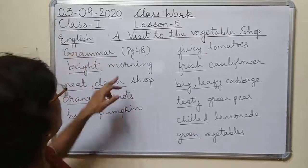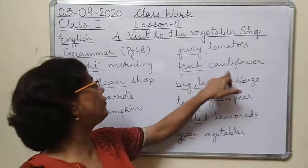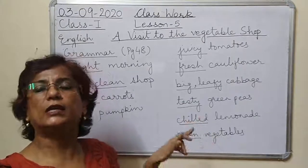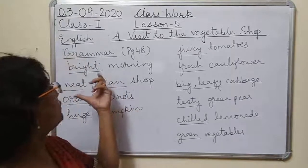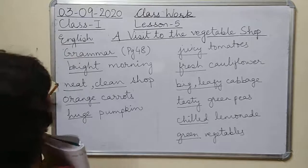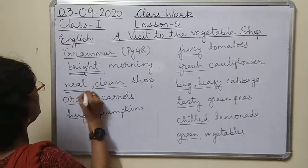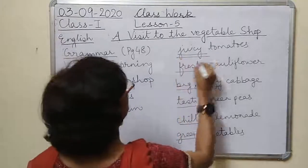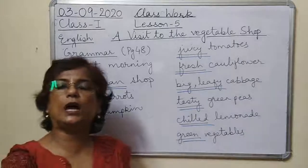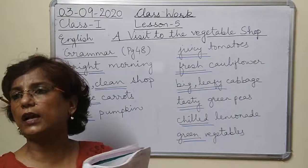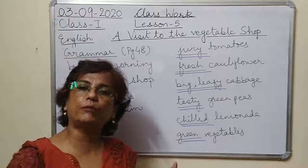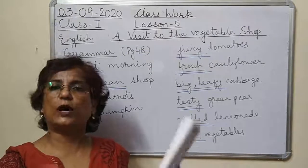So morning, shop, carrot, pumpkin, tomatoes, cauliflower, cabbage, green peas, lemonade, vegetables — these are all naming words. And the words which are underlined — bright, neat, clean, orange, huge, juicy, fresh, big, leafy, tasty, chilled, and green — are known as describing words. 'Describe' means to tell something about a thing. So describing words are the words which tell us something more about the naming words.